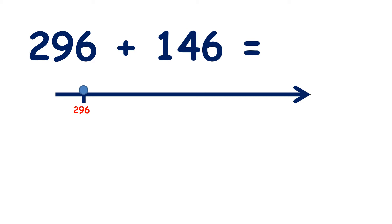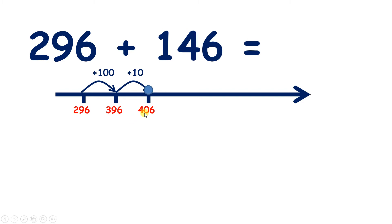Now we have two hundred and ninety-six plus one hundred and forty-six. So if we add one hundred, that takes us to three hundred and ninety-six. Now we need to add four tens. One ten takes us to our next hundred — four hundred and six. But we want to add four tens, so we need three more tens, or thirty, which takes us to four hundred and thirty-six.